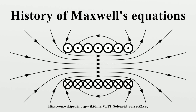B was a weighted vorticity, weighted for the density of the vortex sea. Maxwell considered magnetic permeability μ to be a measure of the density of the vortex sea. Hence the relationship B equals μH was essentially a rotational analogy to the linear electric current relationship J equals ρv, where ρ is electric charge density. B was seen as a kind of magnetic current of vortices aligned in their axial planes, with H being the circumferential velocity of the vortices.